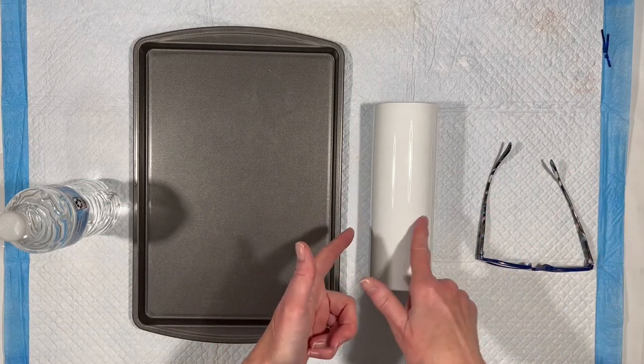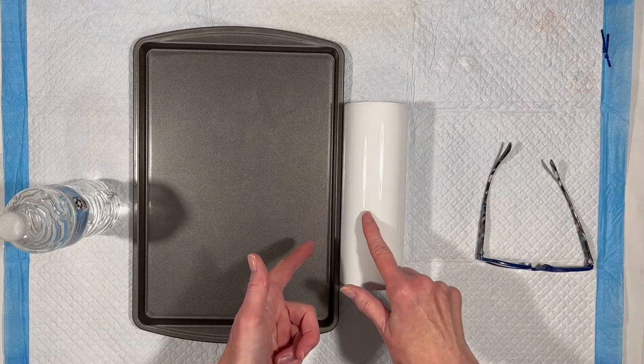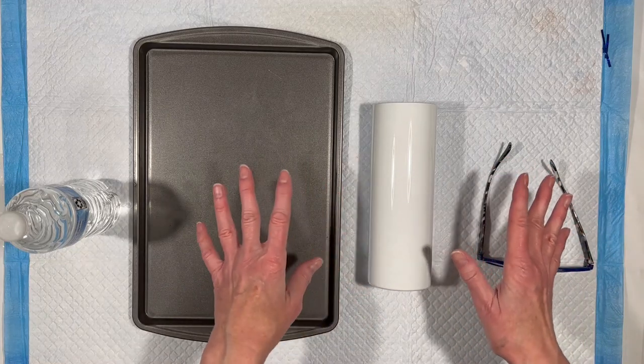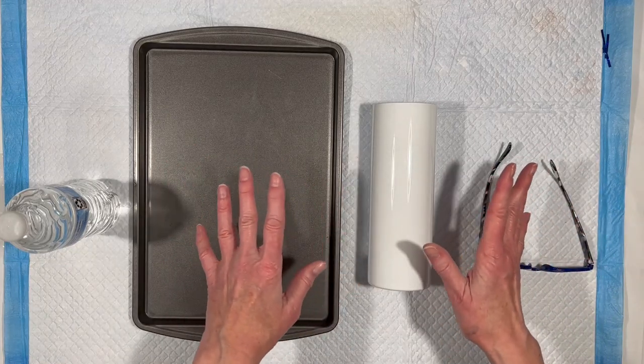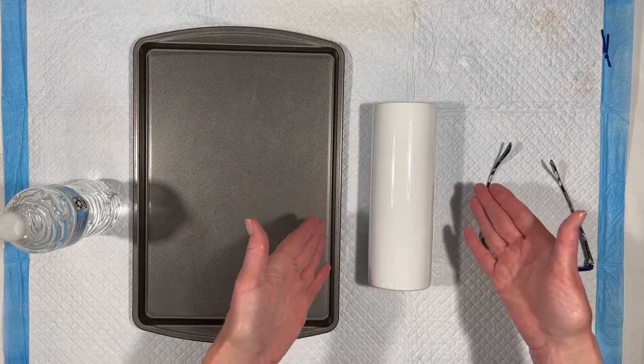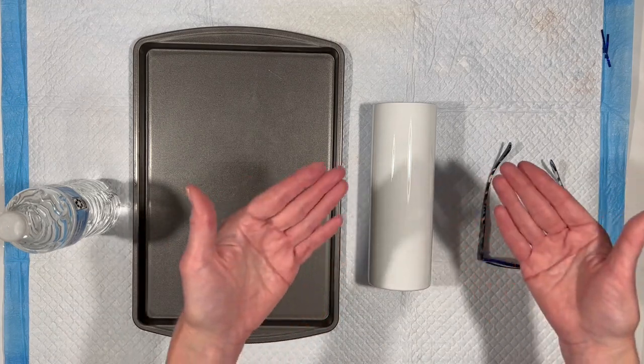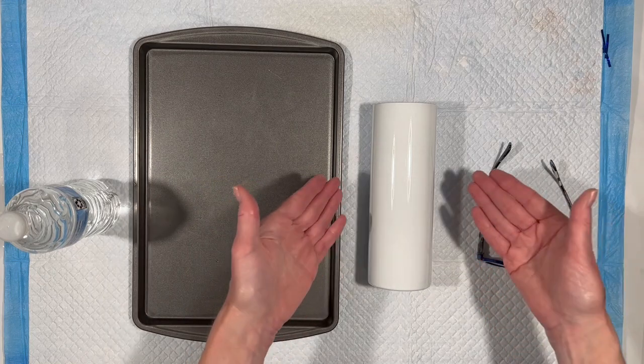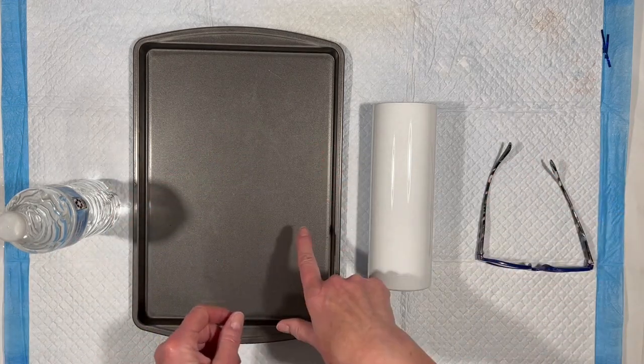Right here I have a sublimation tumbler. It's a 20 ounce skinny straight from Maker Flow. Bought it when it was on sale so the cup isn't any more expensive than a regular naked stainless steel 20 ounce skinny straight. But I have now saved myself the step of three layers of glossy white paint on this.